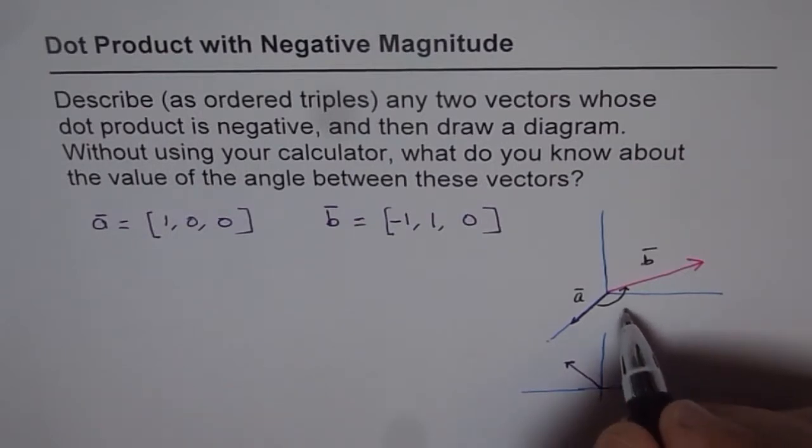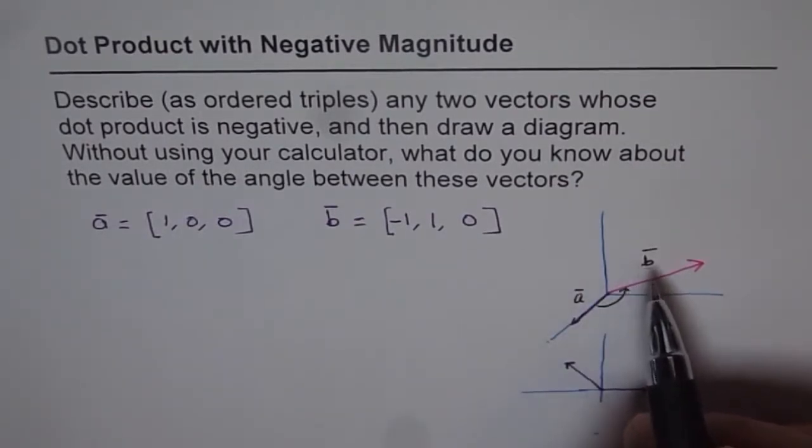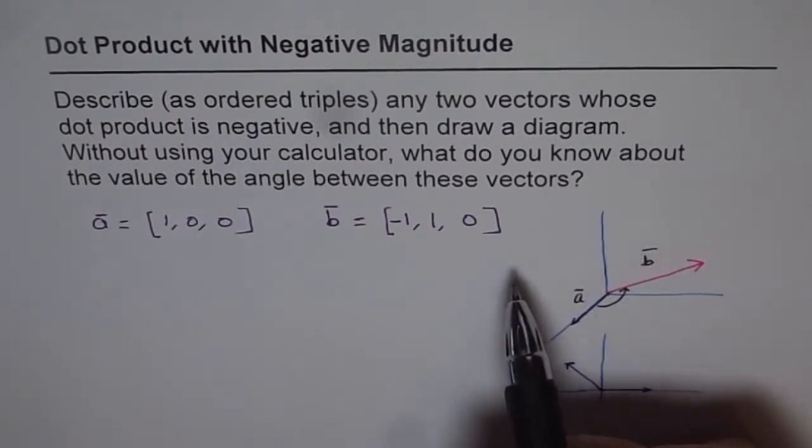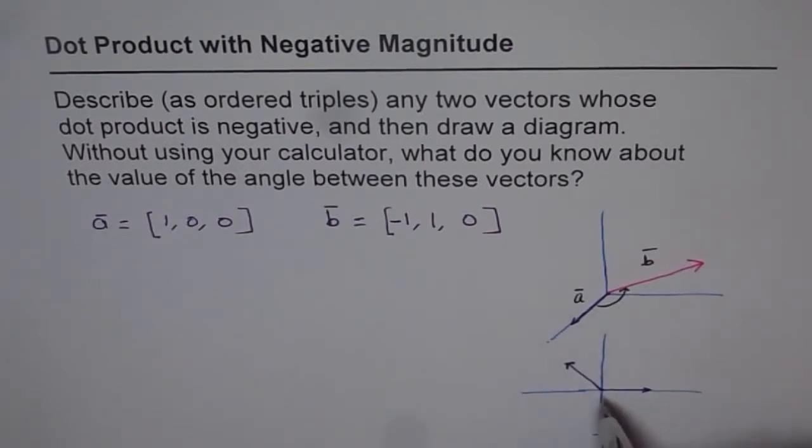On the first part, that is, now we have two vectors whose dot product is going to be negative, since we have taken the angle between them as obtuse.